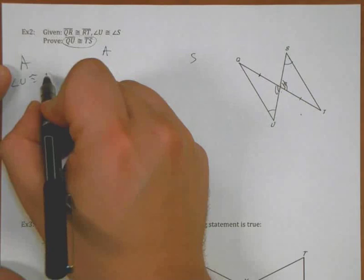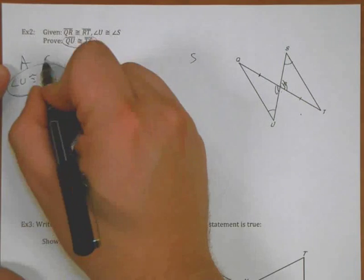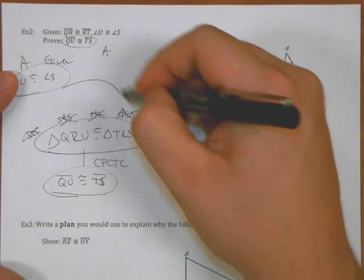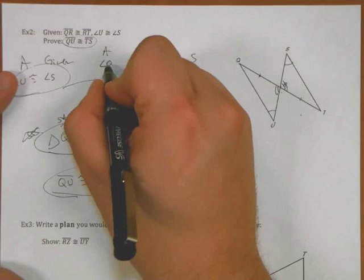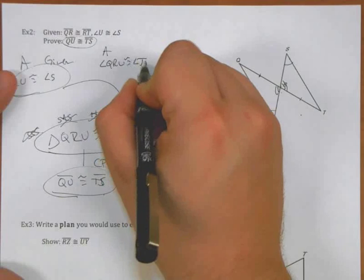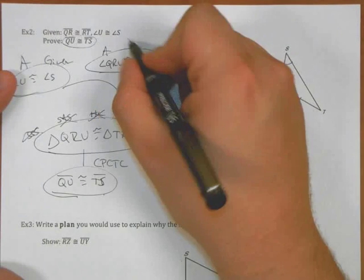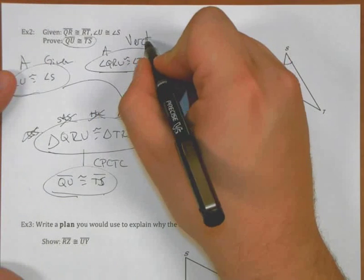What angles are congruent? So angle U is congruent to angle S because that's given. I know angle QRU is congruent to angle TRS because the vertical angles are congruent.